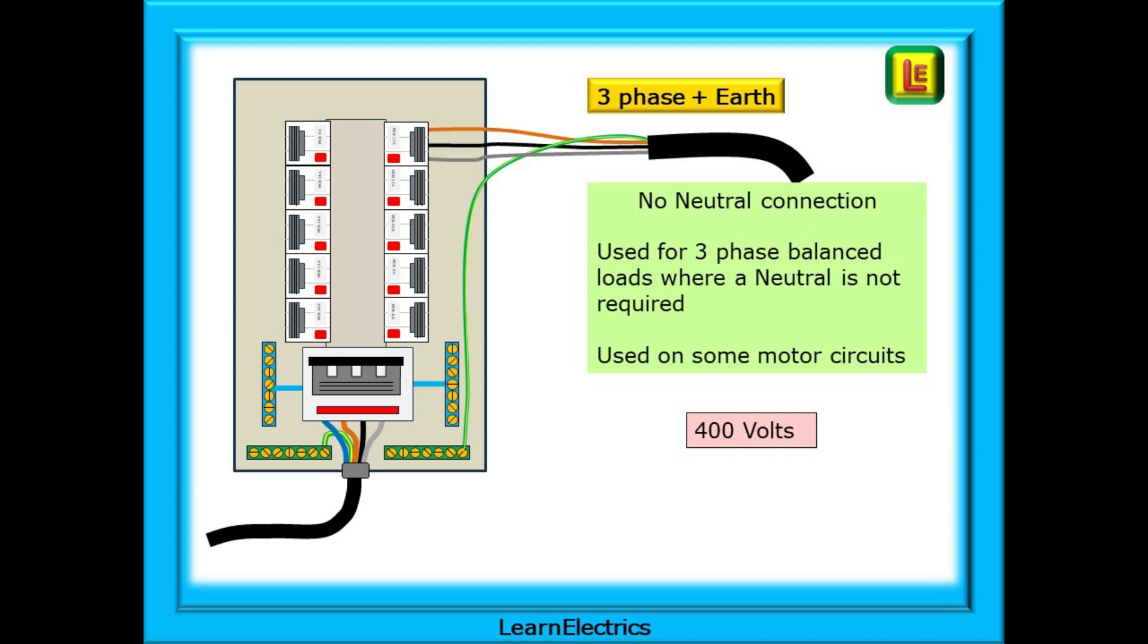This will give us a 400 volt supply between phases. Some motor circuits will not require a neutral, the load or current along each phase being the same. The result, according to Kirchhoff's laws, is a neutral current of zero amps, so no need for a neutral conductor.